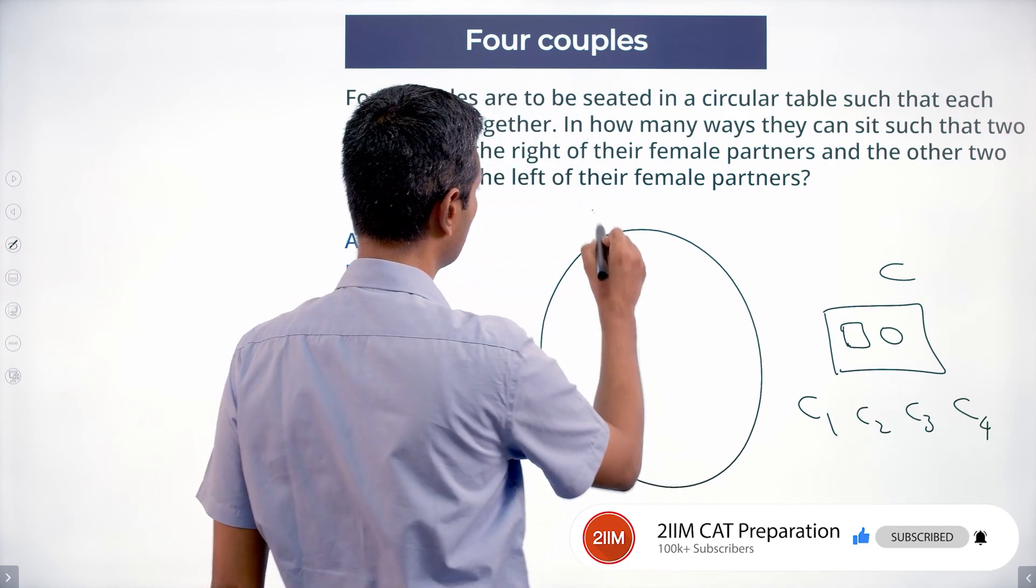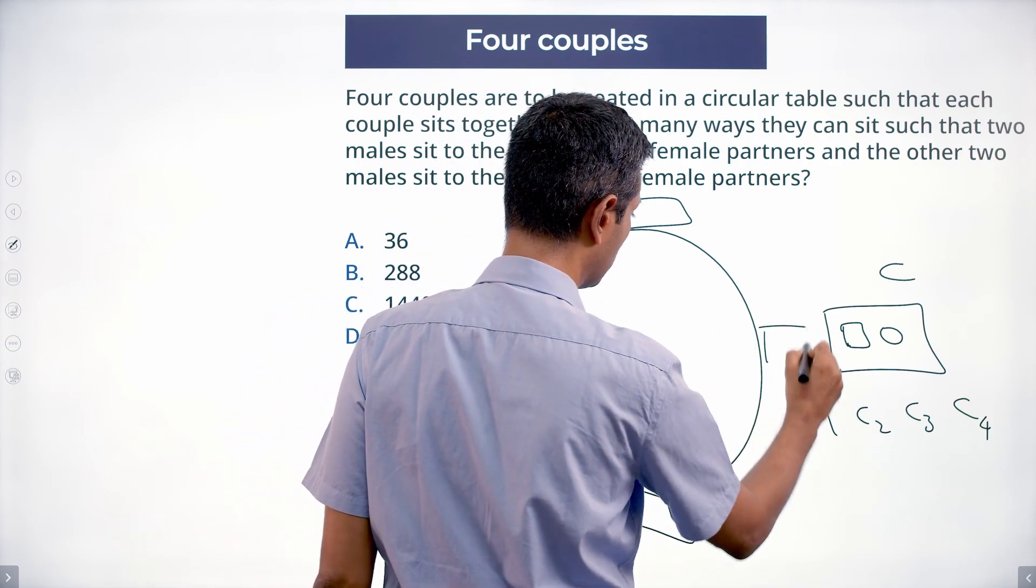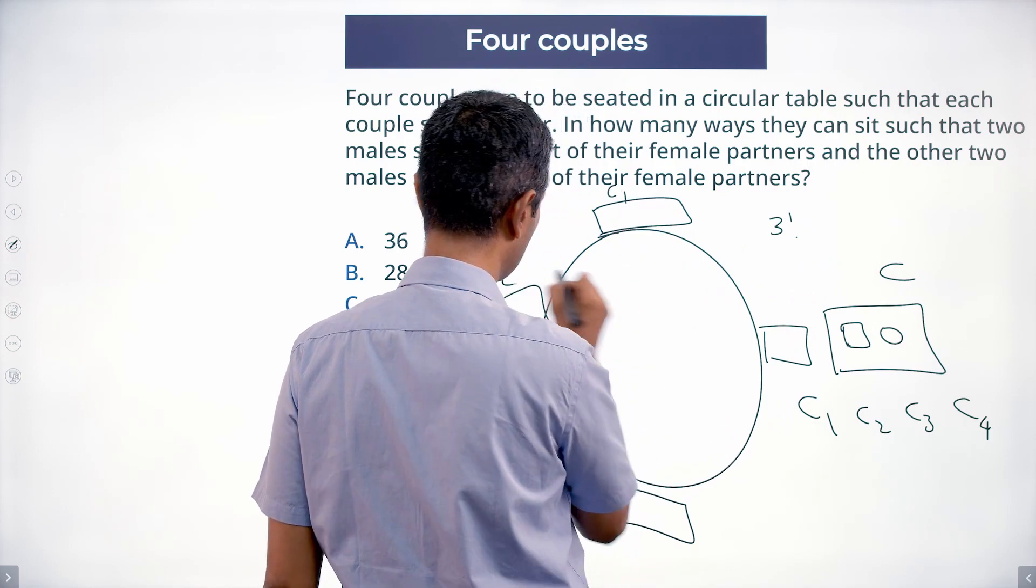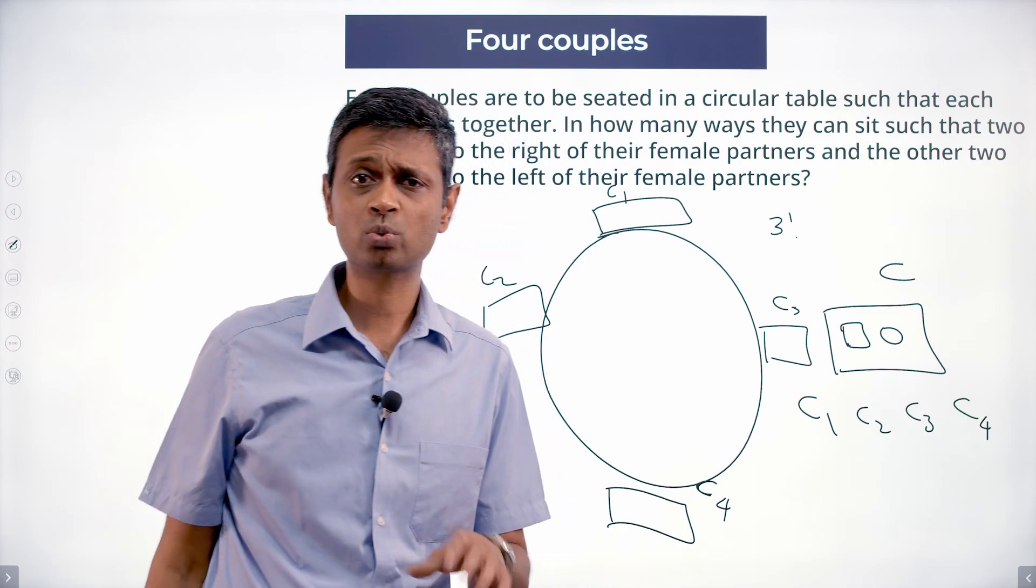So let's have that. This can be done in three factorial ways. C1, C2, C3, C4 they can be rearranged in four minus one factorial, three factorial ways. Lovely.